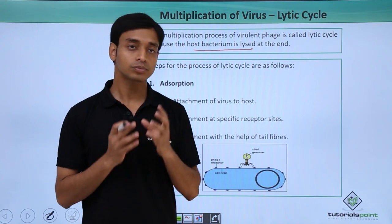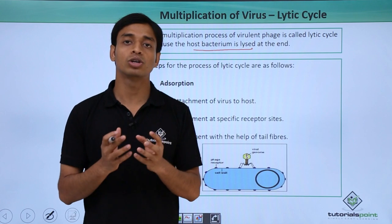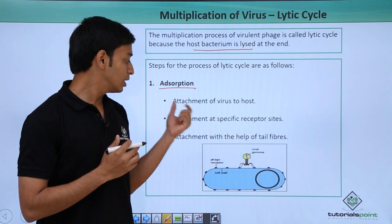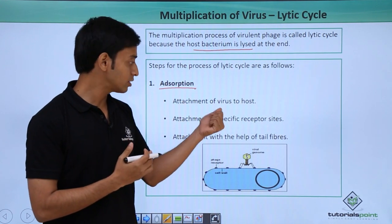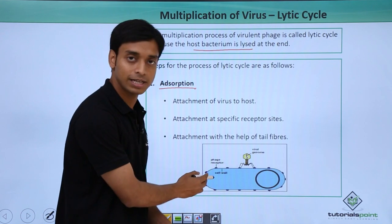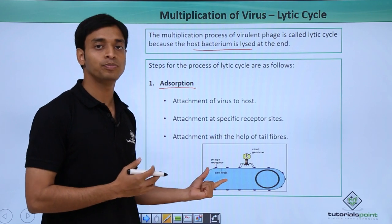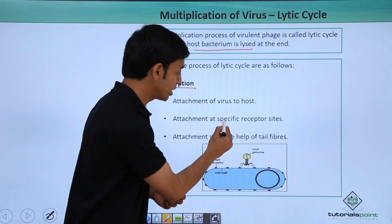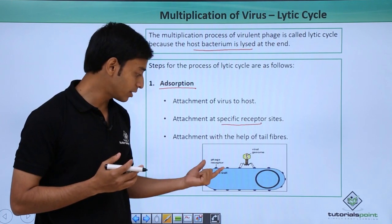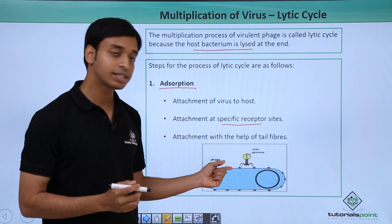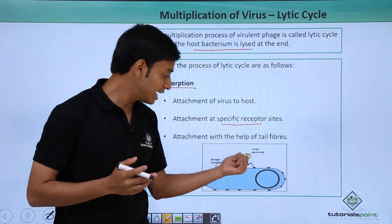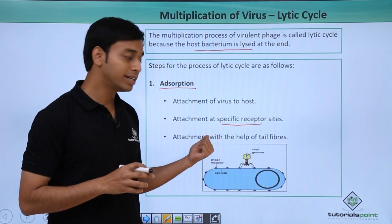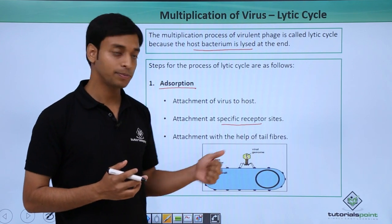Now let us talk about the steps which happen during the lytic cycle. The first step is known as absorption. Here the virus particle first attaches itself to the surface of the host bacterium. This attachment takes place with the help of specific receptors present on the surface of the host organism. These receptors can be recognized by the tail fibers of the virus particle, allowing the virus to attach itself to the host surface.